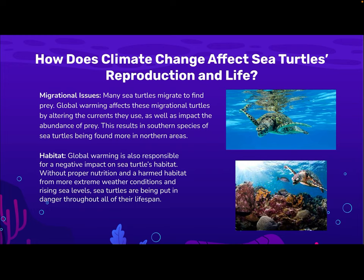Migrational issues: many sea turtles migrate to find prey. Global warming affects these migratory turtles by altering the currents they use as well as impacting the abundance of prey. This results in certain species of sea turtles being found in more northern areas. Also, global warming is responsible for a negative impact on sea turtles' habitat. Without proper nutrition and with a harmed habitat from more extreme weather conditions and rising sea levels, sea turtles are being endangered throughout all of their lifespan.